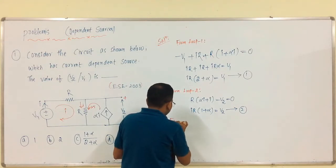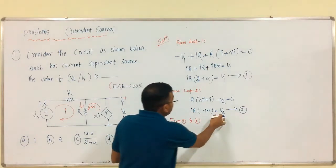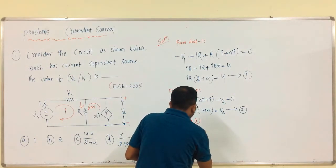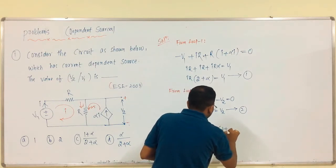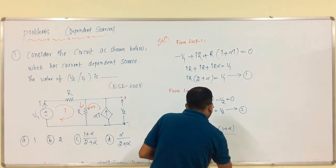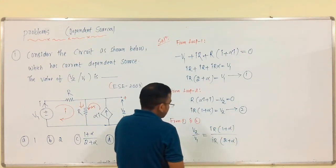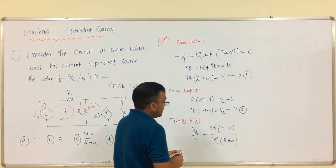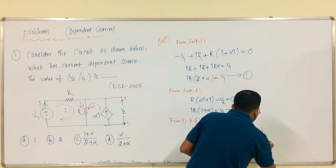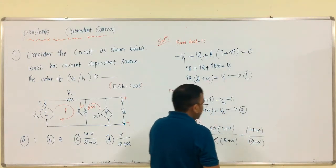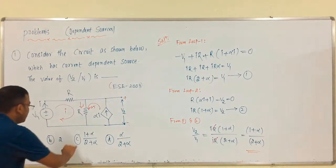From equations 1 and 2, we need V2 by V1. So V2/V1 equals [I·R·(1 plus alpha)] divided by [I·R·(2 plus alpha)]. The IR cancels, therefore we have (1 plus alpha) by (2 plus alpha). This is the required answer — option C.